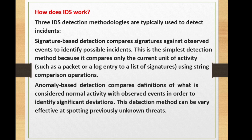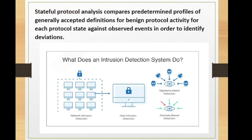The second method is anomaly-based detection, which compares the definition of normal activity with observed events to identify significant deviations. This can be effective at spotting previously unknown threats - for example, a DDoS-style attack where a large number of requests hit a server. The third methodology is stateful protocol analysis, which compares predetermined profiles of accepted benign protocol activity for each protocol state against observed events to identify deviations.